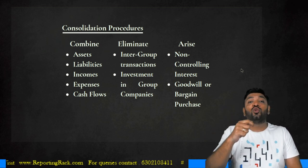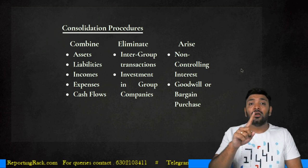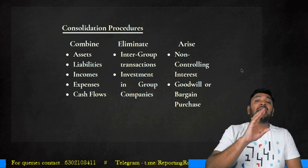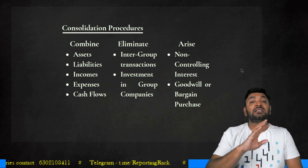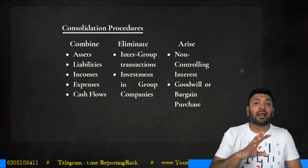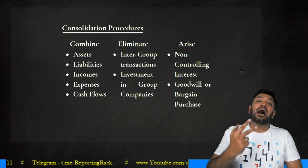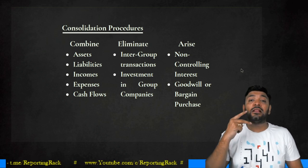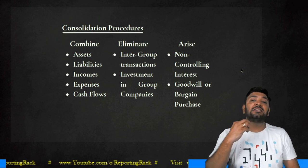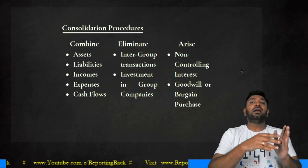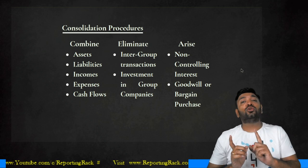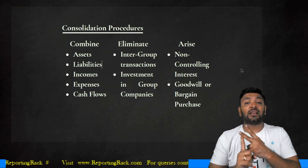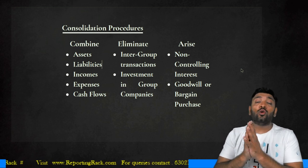When the investment in subsidiary is eliminated, it gives rise to either goodwill or bargain purchase as per Ind AS 103, which deals with business combinations. Another item that arises during consolidation is non-controlling interest (NCI). These two — goodwill/bargain purchase and NCI — are the new items that emerge during consolidation. Simple combination involves addition; elimination involves deduction; but these two new items require specific computation.